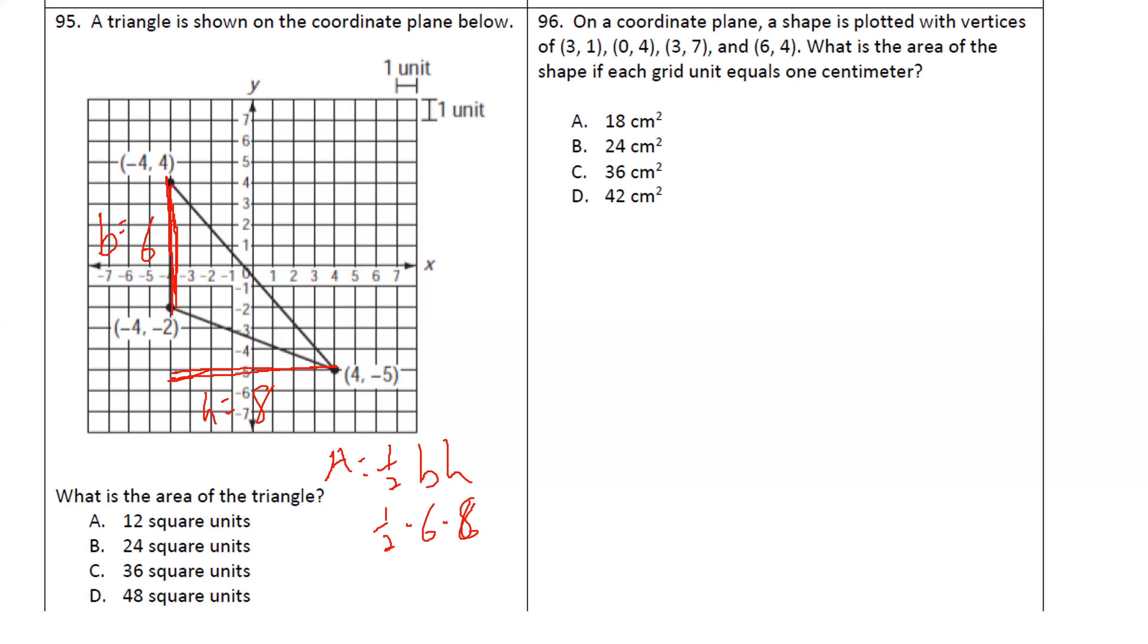Plug it in: one half times six times eight. That's going to be 24. So that's B. Our 96 on a coordinate plane, a shape is plotted. I would recommend graphing this.